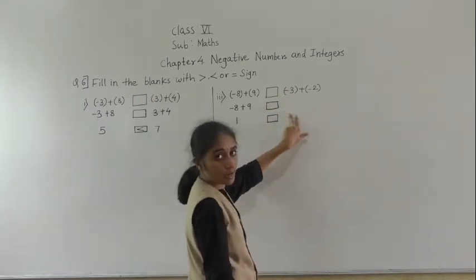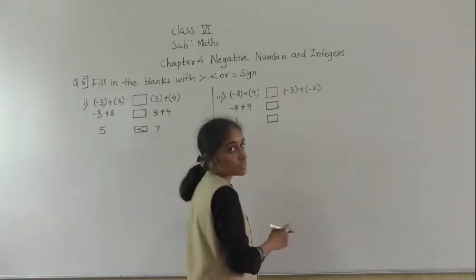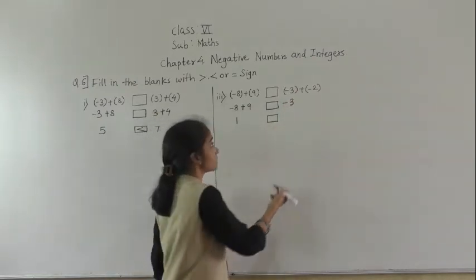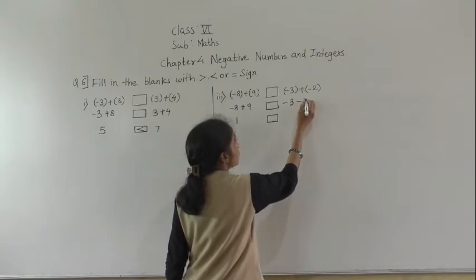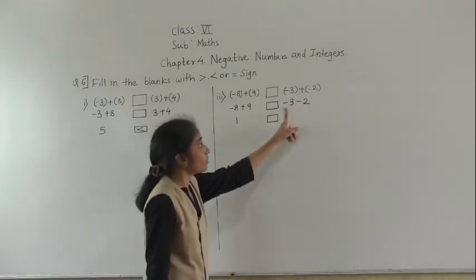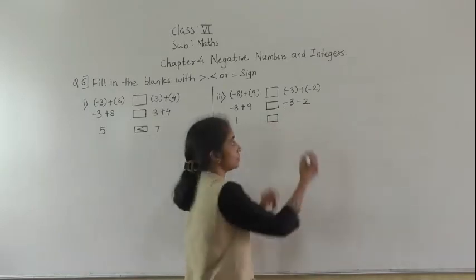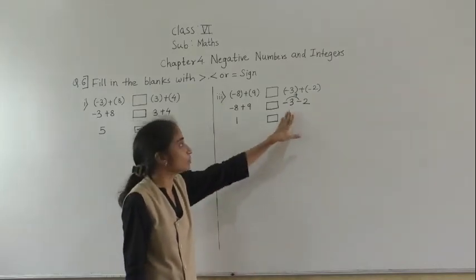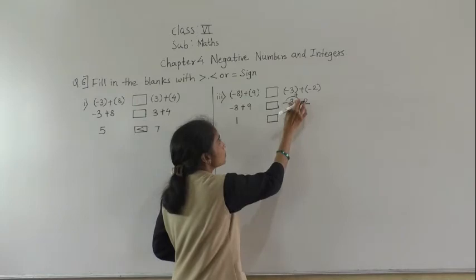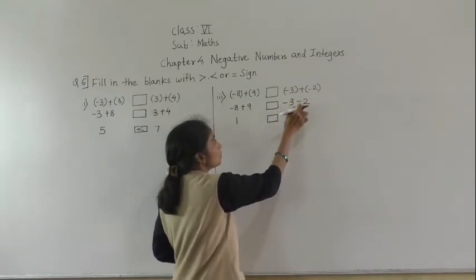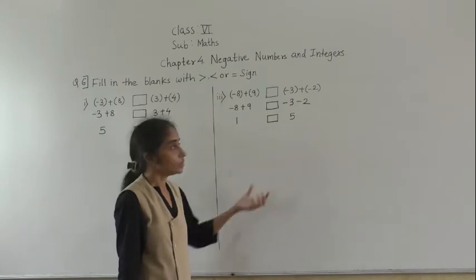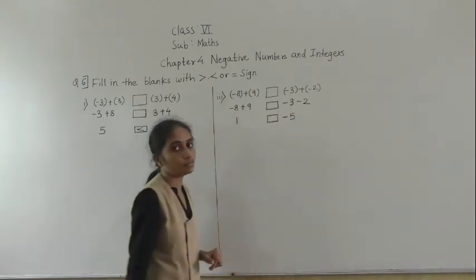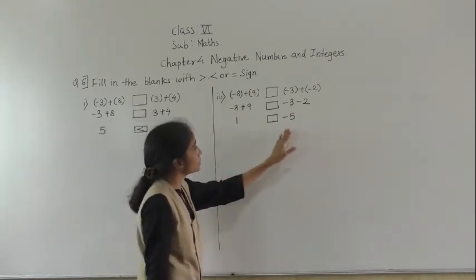Now we solve this side. We open the bracket first. There is no sign, which means plus, then plus minus gives minus, minus minus gives plus, so we get minus 3. Plus minus gives minus, minus minus gives plus, so we get minus 2. Now minus 3 minus 2: both numbers have a negative sign. For the answer also we keep the negative sign. 3 plus 2 equals 5, so the answer is minus 5.